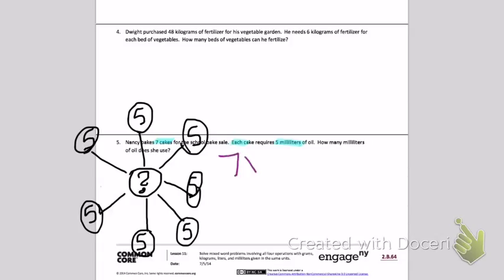7 groups times 5 milliliters. I am going to skip count by 5's 7 times. 5, 10, 15, 20, 25, 30, 35.